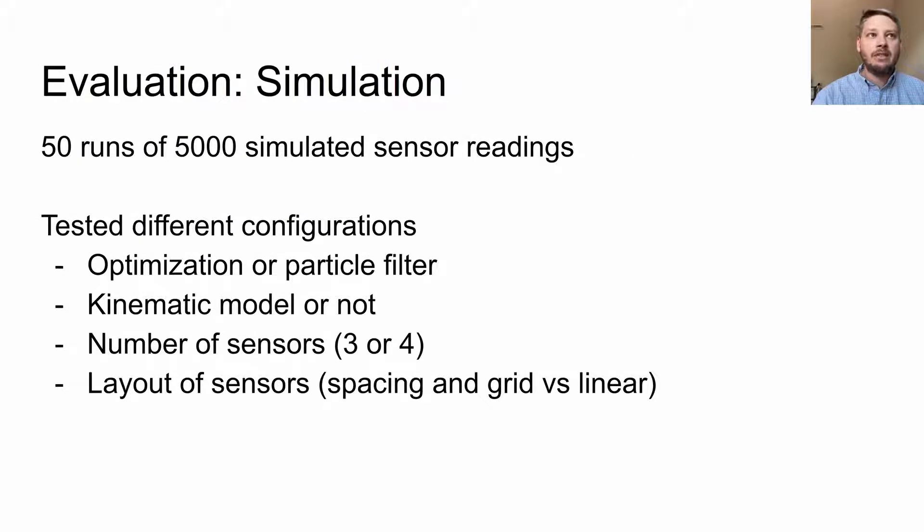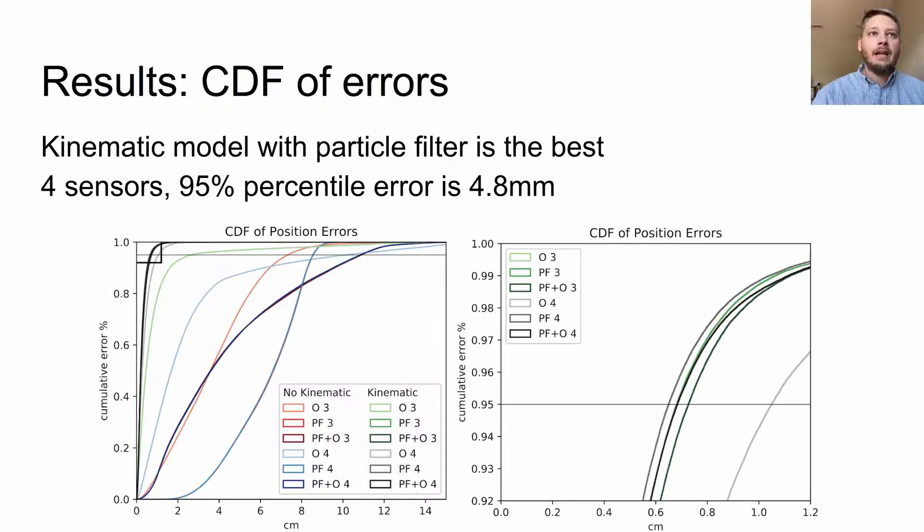We conducted a simulation with 50 different runs of 5,000 simulated sensor readings. This let us test various permutations of the system. The best results were the kinematic model using the particle filter. We found the 95th percentile error was less than five millimeters.